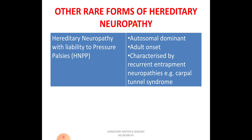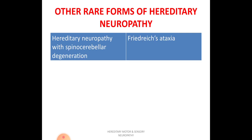Hereditary neuropathy with liability to pressure palsies, abbreviated as HNPP, is genetically autosomal dominant. Features start at the age of adulthood and clinically it is characterized by recurrent entrapment neuropathies — for example, entrapment of the median nerve, which is known as carpal tunnel syndrome.